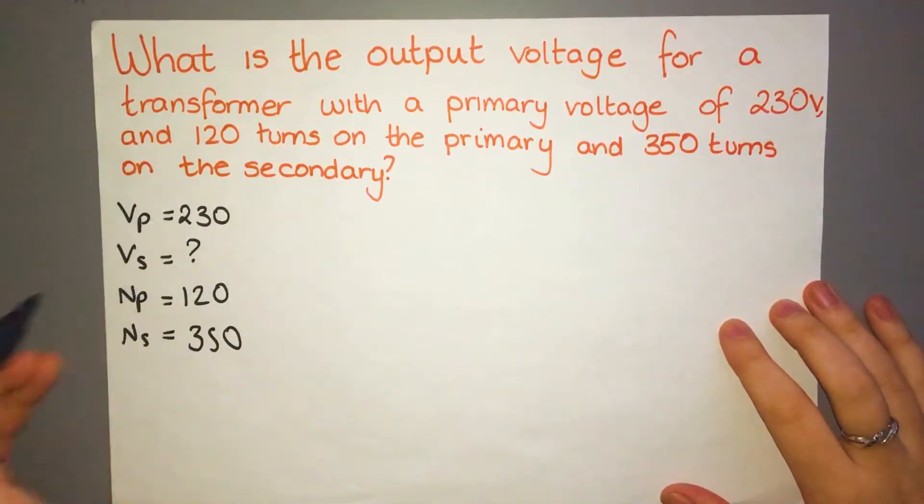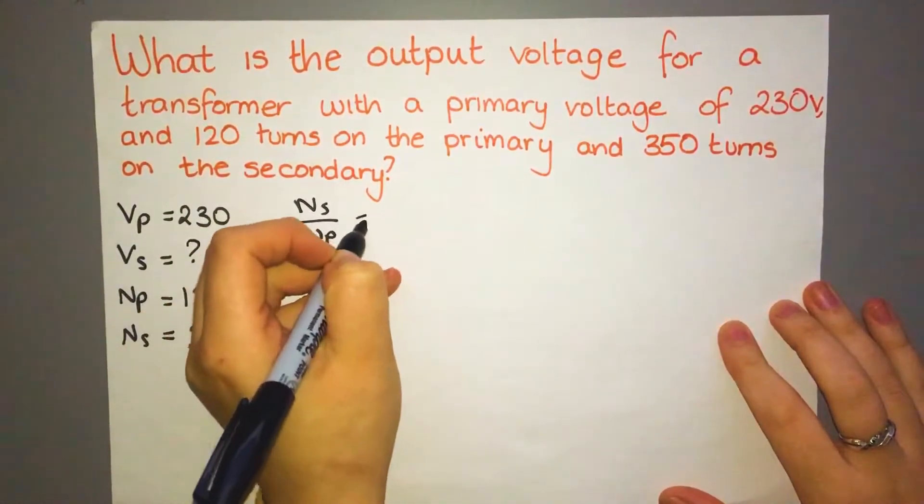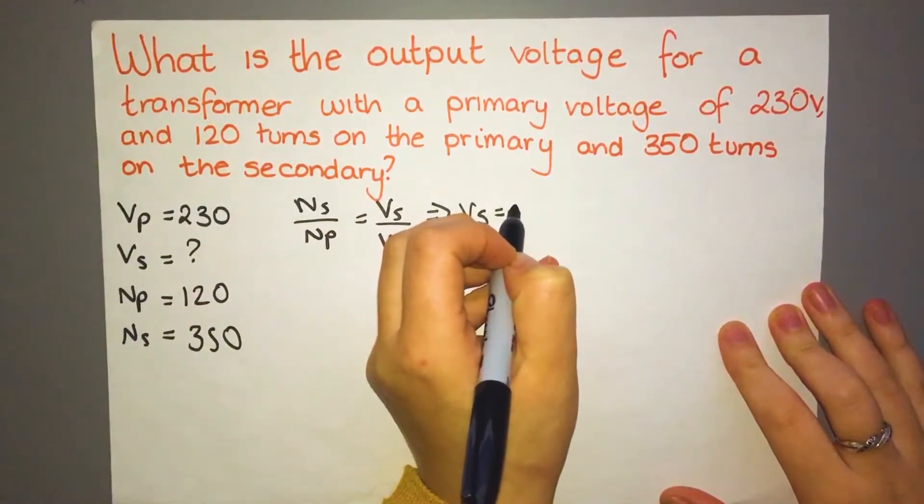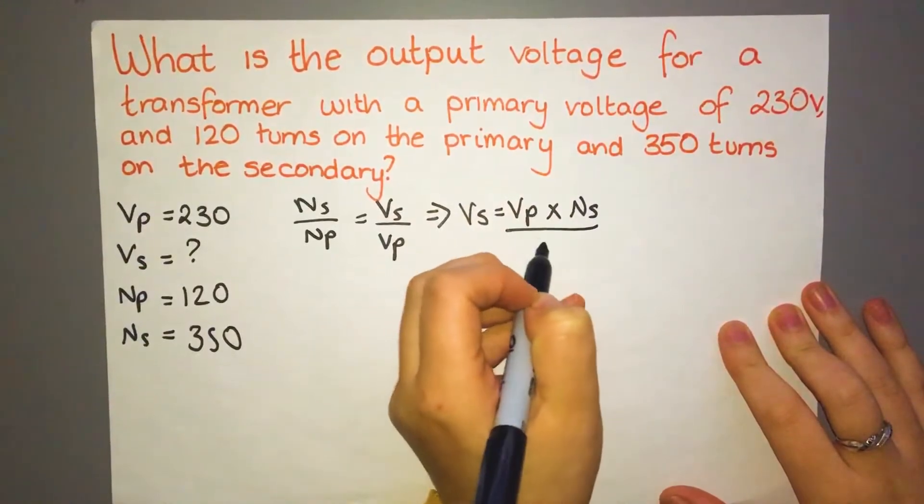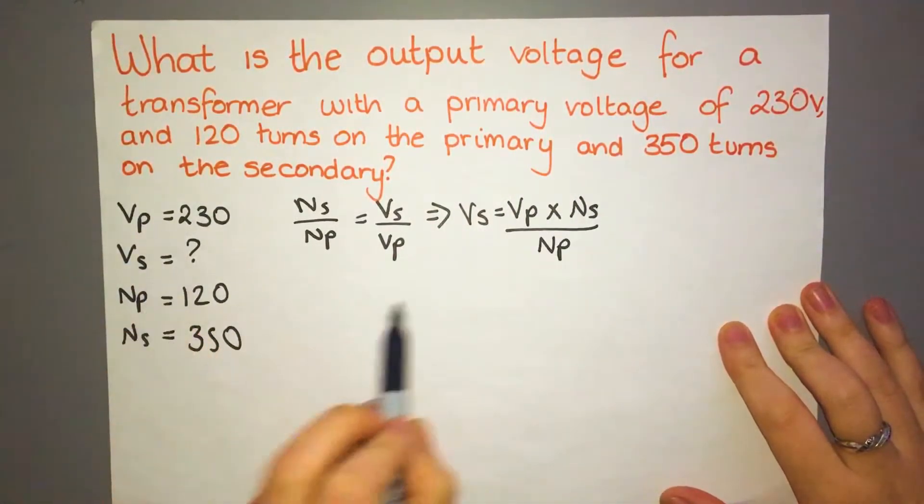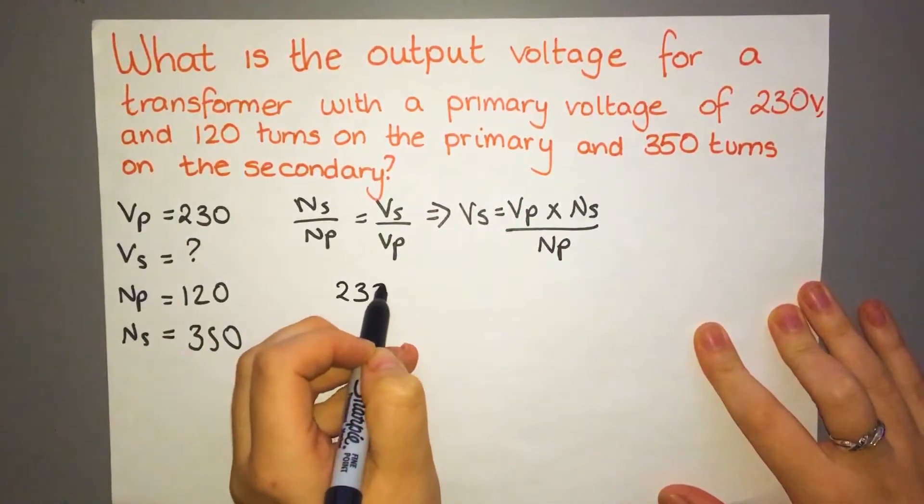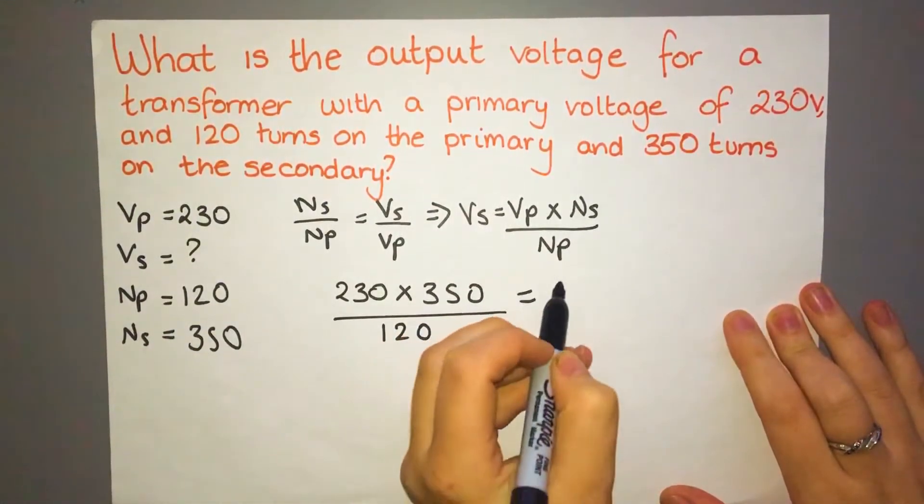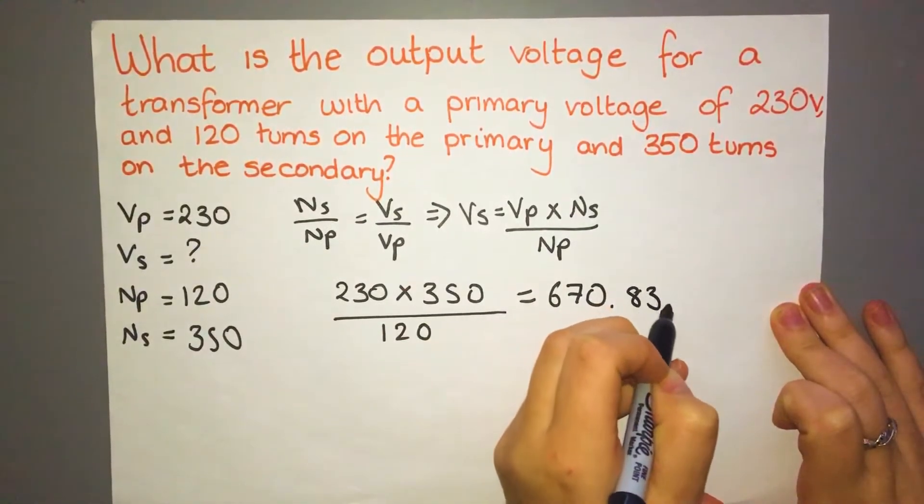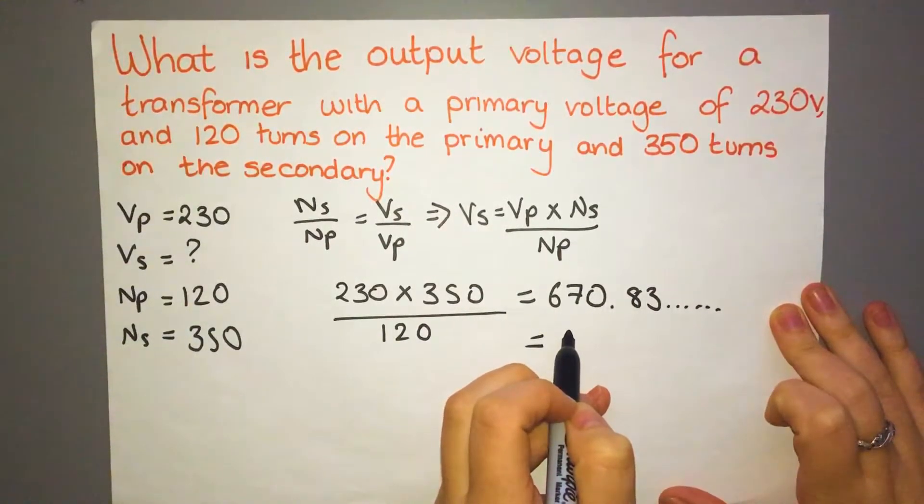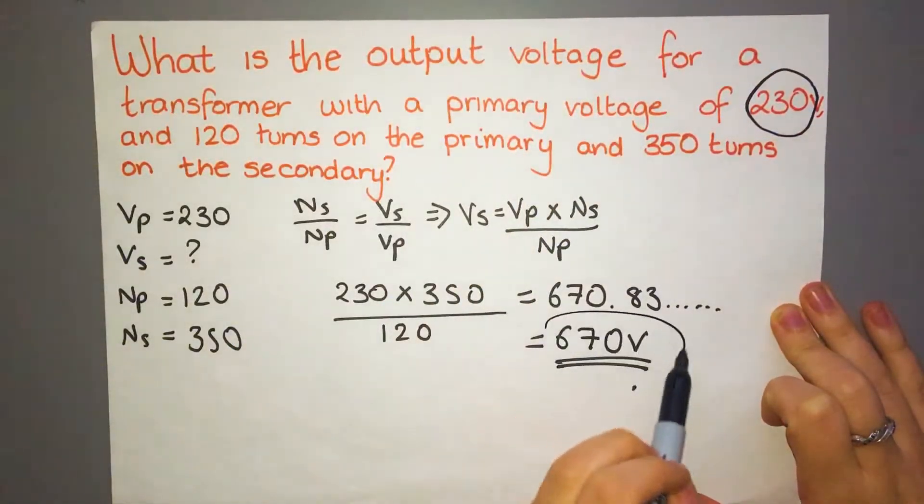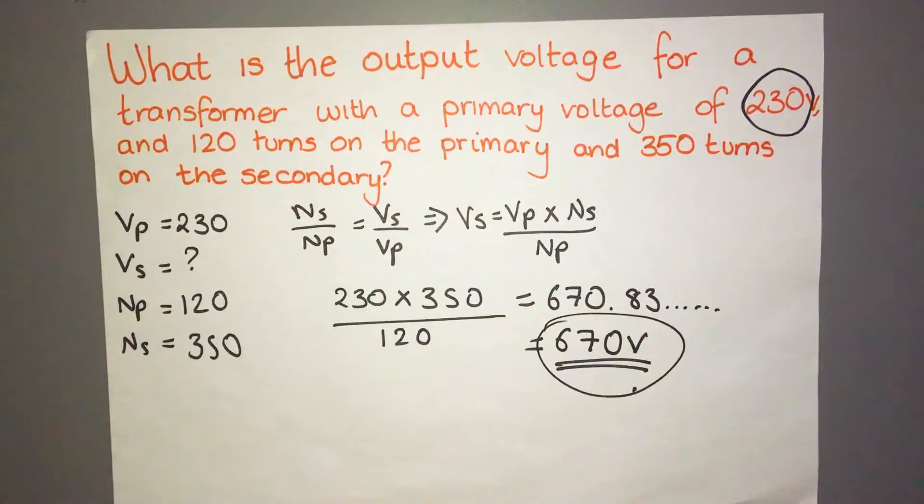So what we would have to do is rearrange this equation. So if I substitute in the numbers I know here to find my VS, what we'll have is 230 times by 350 and then divided by 120 and that will give us an answer of 670.83 recurring. So if I was to round that up, that would be to two significant figures, that's 670 volts, which as I said before, it was 230, it's gone up to 670. So you have kind of a way to check if you've done it correctly. So it's always worth being aware of that when you're doing the questions in the exam because you can basically fact check yourself.